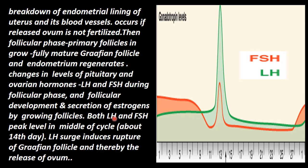Both luteinizing hormone and follicle-stimulating hormone are at their peak — the highest level — in the middle of the cycle, that is around the 14th day. As you can see, the level goes up then goes down, then becomes peak again. The green color is LH and this is FSH. Both are at peak at the 14th day where ovulation occurs. This is called the LH surge — the surge of luteinizing hormone to the top level. This induces rupture of the Graafian follicle and thereby the release of the ovum. The ovum is released at the 14th day because of the surge of LH hormone.